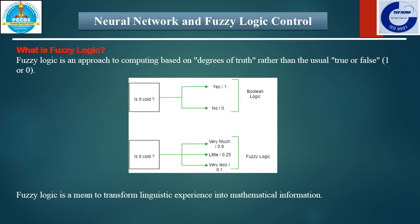Let me explain this with one example. Is it cold? For this question, the answer may be yes or no, which is converted to 1 or 0 according to Boolean logic. But according to fuzzy logic, the answer may be partially true or partially false. The answer may be very cold, moderate cold, or less cold. So for less cold we can assign 0.1, for moderate 0.25, and for very much cold 0.9. So fuzzy logic is a means to transform linguistic experience into mathematical inference, capable of handling uncertainties and imprecise or vague concepts.